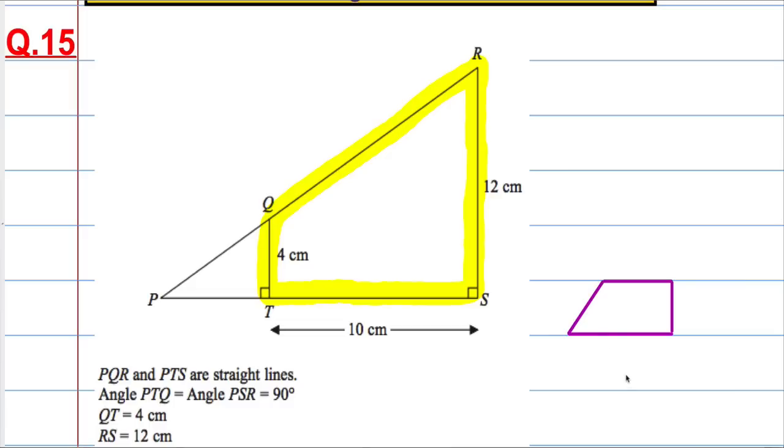And we know that the height, if you tilt your head to the left, the height of this is 10. One of the parallel sides is 12, the other is 4, and we want the area.